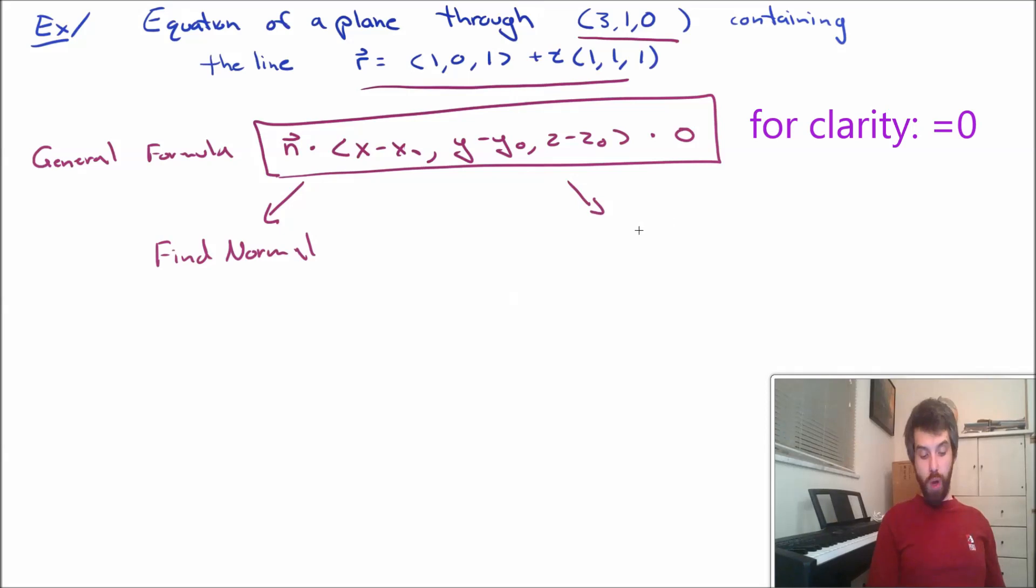We want to find from these two different pieces of information a normal, and we also want to find a point on the plane. Now finding a point on the plane should be relatively easy. We've been given that this is the equation of a plane through 3, 1, 0. So we can already say that x0, y0, z0 is just going to be 3, 1, 0. But the key for us is to figure out what the normal is.